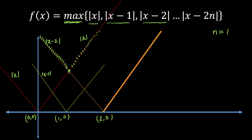One more logic which is very important: if I am taking from 0 to 2, you have to trace out the midpoint. Before the midpoint, the last function — that is mod of x minus 2 — will be the maximum. And after the midpoint, mod of x will be the maximum, and it is visible here as you can see.